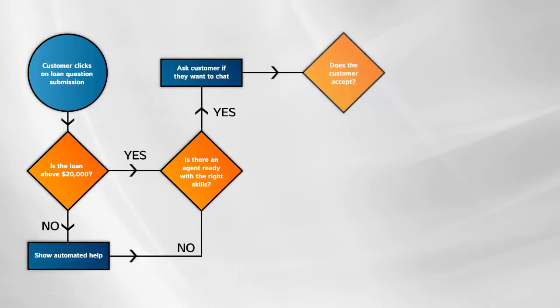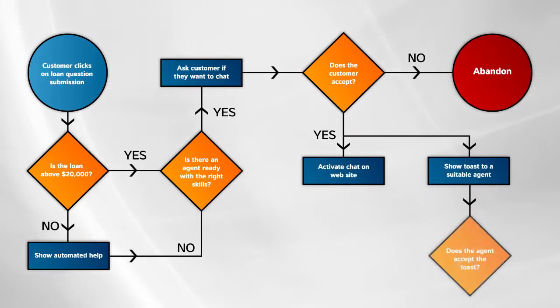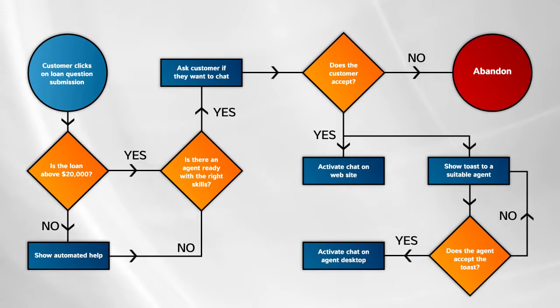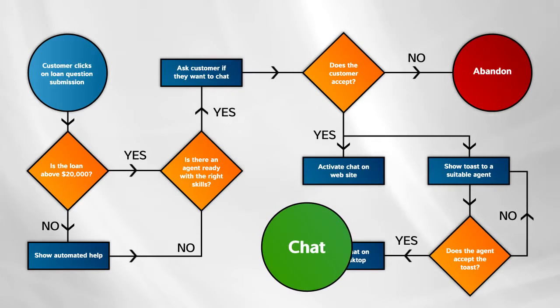The G-Bank business rules dictate that requests above $20,000 must go through a loan specialist, so a chat session is initiated between John and Claire. Claire is a skilled contact center agent who uses Genesys Workspace on her computer, which is embedded with Microsoft Skype for Business to receive and handle all types of interactions from G-Bank customers.